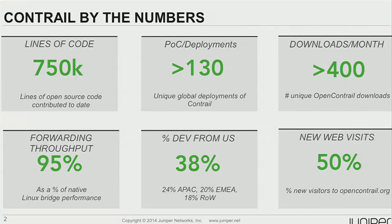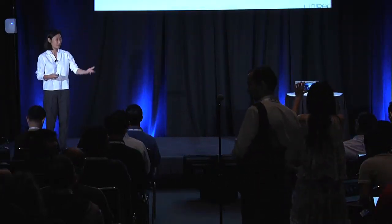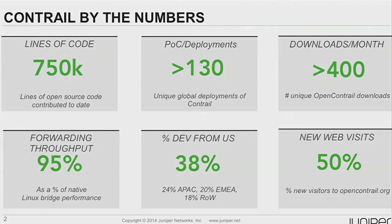On forwarding throughput, there was a customer session yesterday that validated we're seeing consistently about 5% within Linux Bridge performance. A lot of people ask whether there is a penalty for doing software forwarding, and so far we've been pretty pleased with the results. In terms of pilots and deployments, as well as geographic diversity, we've had a lot of interest from various segments — emerging service provider and traditional enterprise — and there's been a big thirst to get this into pilot and production deployment.